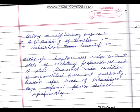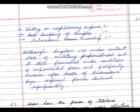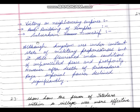Conclusion for this question: 'Although the kingdom was under a constant state of military preparedness, it still flourished under conditions of unparalleled peace and prosperity. However, after the death of Krishnadevaraya, imperial power declined significantly.' This is the conclusion drawn from the consequence of his death.